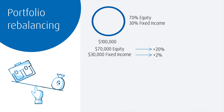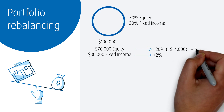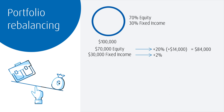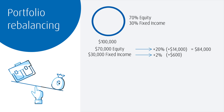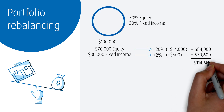Breaking this down: we have $70,000 in stocks that earn 20%, which is $14,000, giving us a new total of $84,000. We take our $30,000 in fixed income and increase this by 2%, which is $600, giving us a new total of $30,600. Our new overall portfolio value is $84,000 plus $30,600, which equals $114,600.